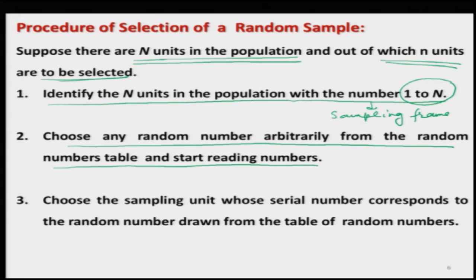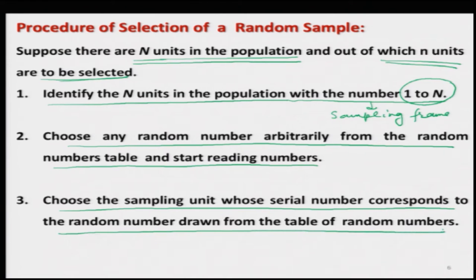This is what I told you — I will try to interlink the concept of classical sampling theory with data science, and as I go further in the topics I will try to do more such analysis. Now let us come back to our procedure: you try to choose any number arbitrarily from the random number table and start reading the numbers. Whatever number you have drawn, choose the sampling units whose serial number corresponds to the random number drawn.